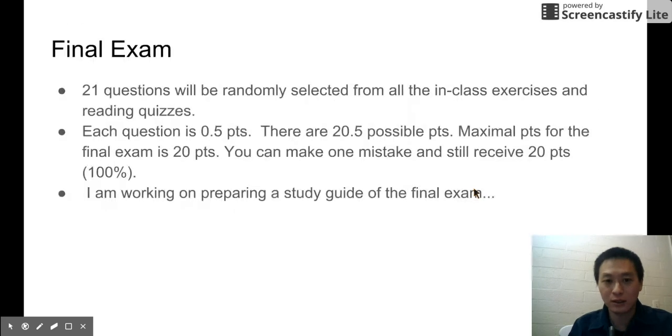And let's see the final exam. So 21 questions will be randomly selected from all the in-class exercises and the reading quizzes. So all the material will be the material that you are familiar with. They will be identical. So if you are doing well for the in-class exercise and the reading quiz, then you will be doing well for the final exam. And each question would be 0.5 points. And so we have 21 questions and the possible points will be 20.5. However, the maximum points for the final exam is 20. In other words, with this setting, you can make one mistake and still receive 100%.